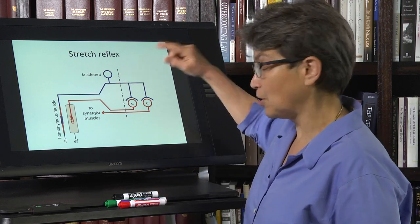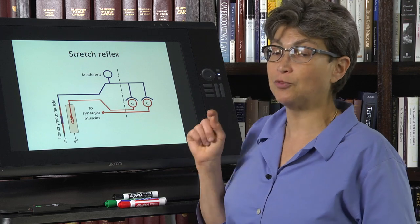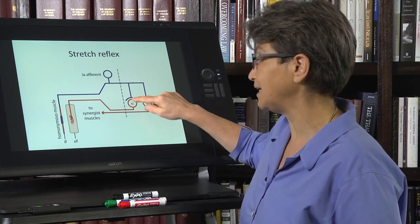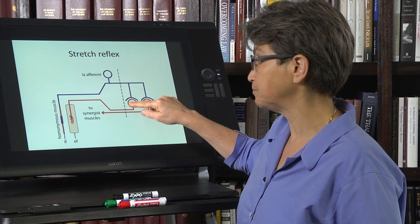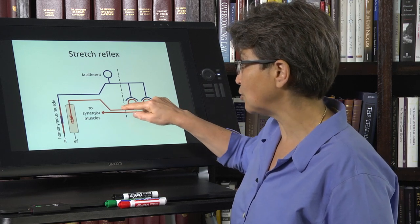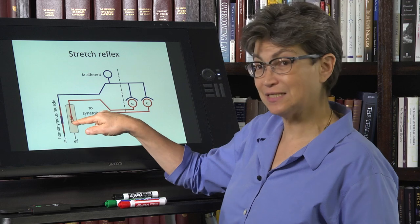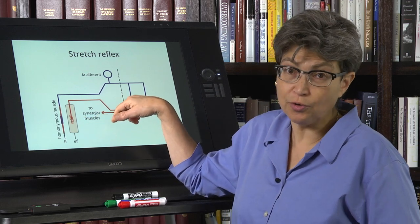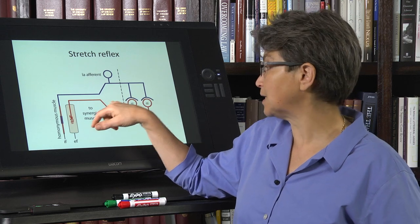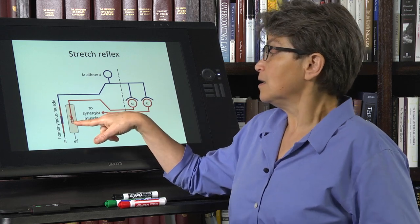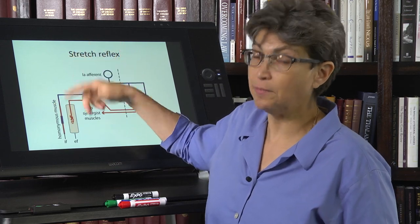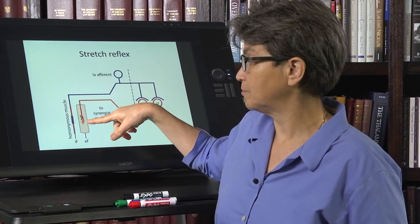The really amazing thing about the 1A afferent is that it innervates directly on motor neurons. And that motor neuron then goes back and activates extrafusal fibers. This is a motor unit. It's going to activate extrafusal fibers in the homonymous same muscle.